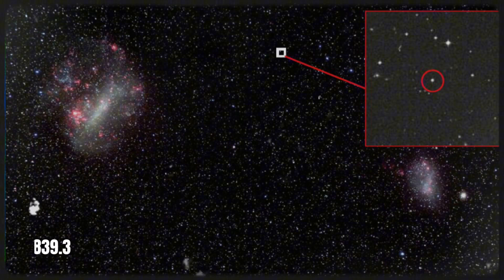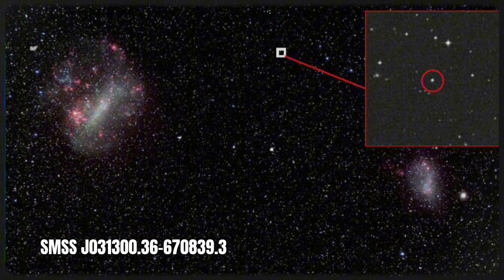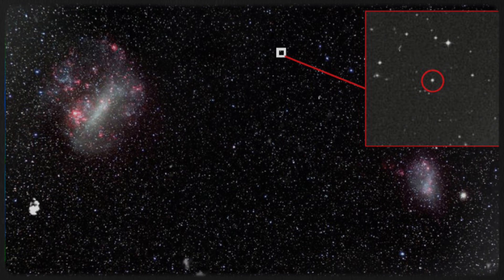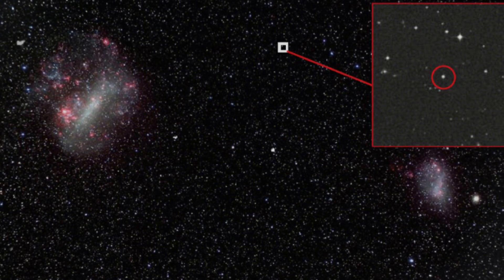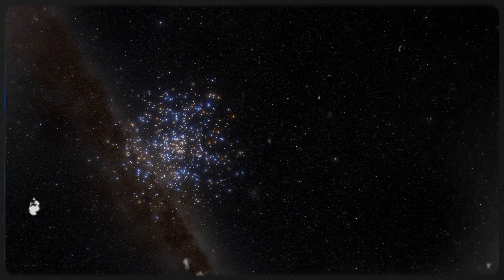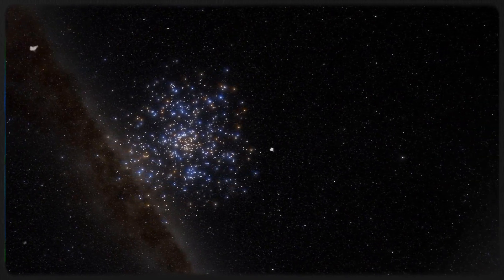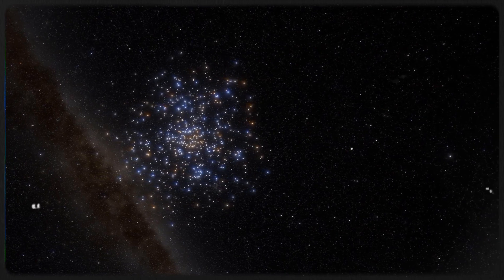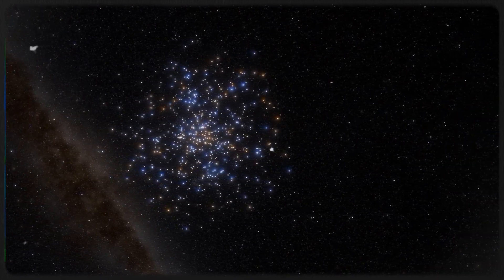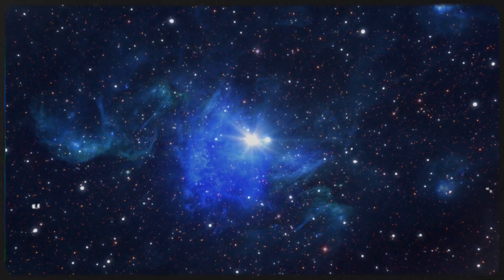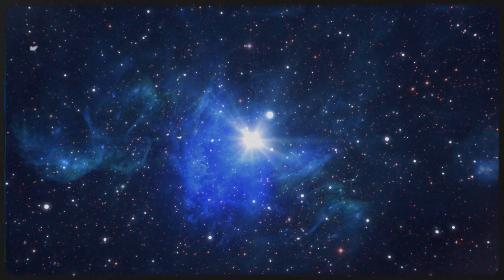One such star, SMSS J031300.36-670839.3, clocks in at over 13.6 billion years old and resides in the halo of our galaxy. This star contains so few heavy elements that it's believed to be a direct descendant of the first generation of stars. Its minimal metal content is typical of stars formed during the universe's earliest phases, likely exploding as supernovae shortly after. Scientists celebrated this discovery as it confirmed their theories about the massive stars of the first light.